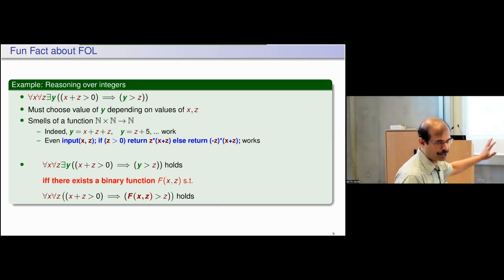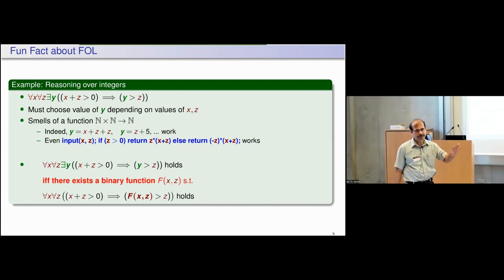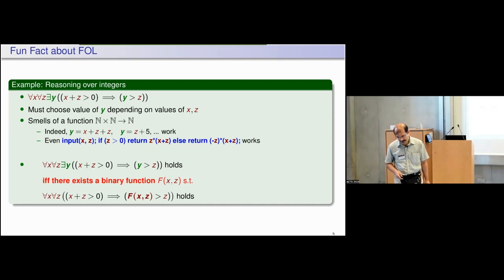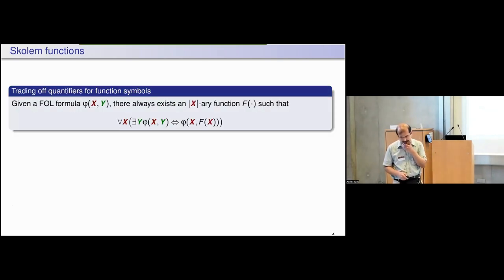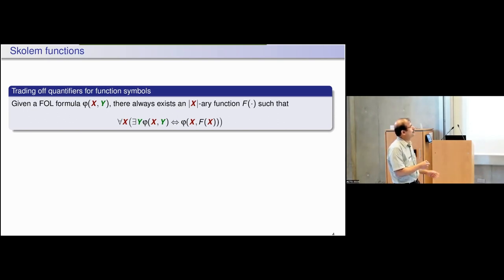In second order we could say there exists an f such that this second formula is true. But if I want to stay within first order I introduce one more function symbol in the vocabulary and give an interpretation for that function. This is basically trading quantifiers for function symbols — a very standard thing in first order logic.